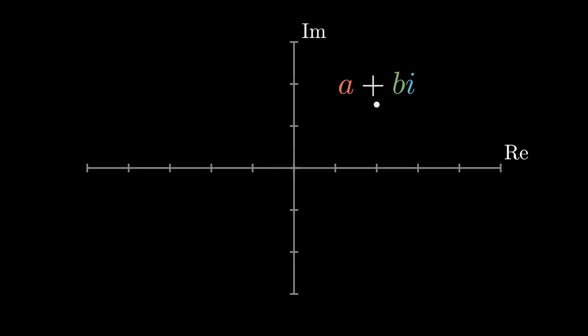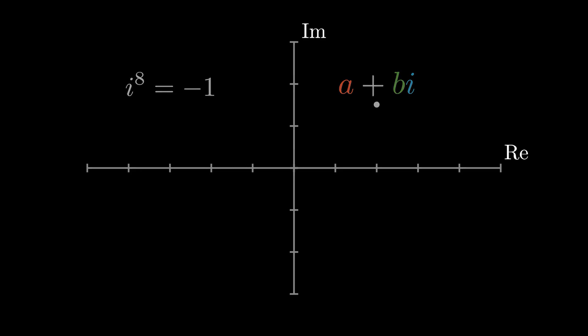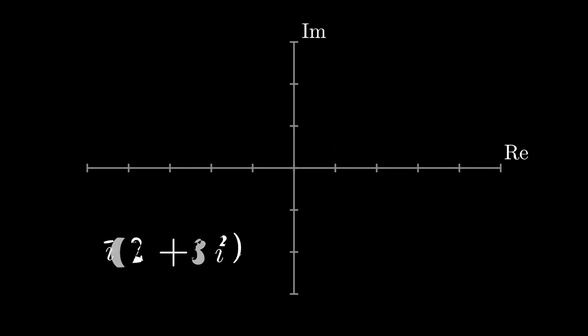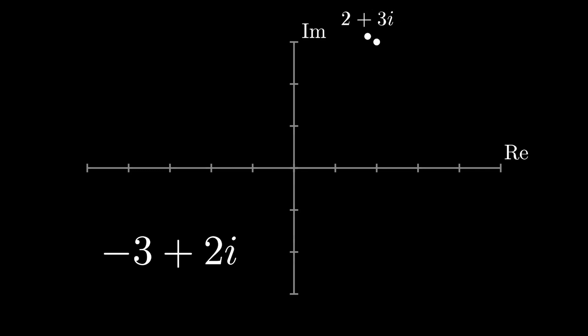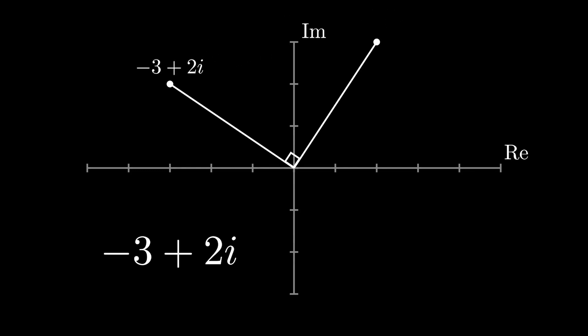This 2D representation means we can do interesting things with complex numbers. Multiplying by i results in a 90-degree rotation counterclockwise along the complex plane. You can see this from the definition: i squared is negative 1, i cubed is negative i, i to the fourth is 1, then back to i, and so on. Represented on the complex plane, every time we multiply by i, we rotate 90 degrees counterclockwise. For example, multiplying 2 plus 3i by i gives negative 3 plus 2i, which is a 90-degree counterclockwise rotation. This rotation property will come up later.